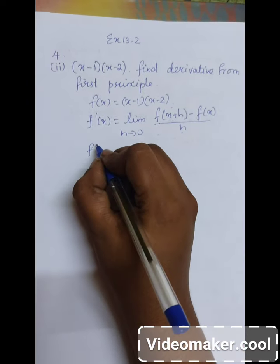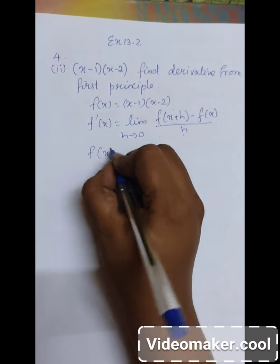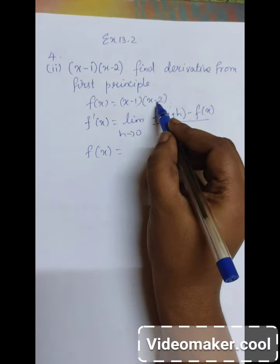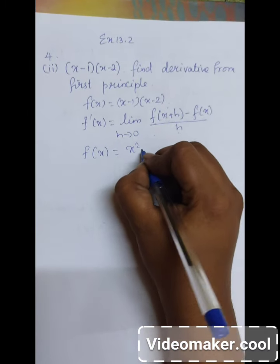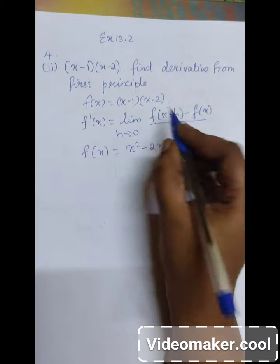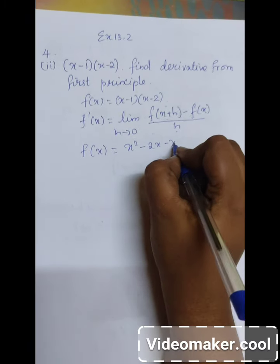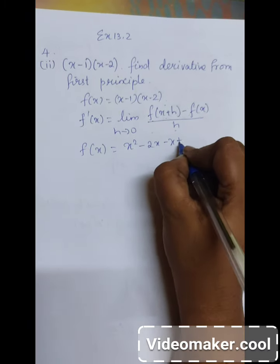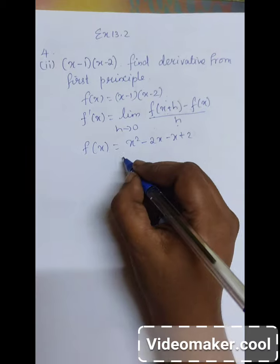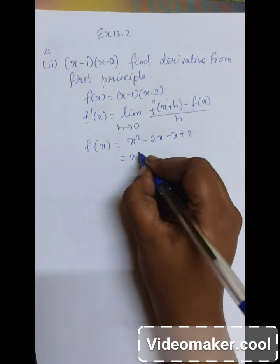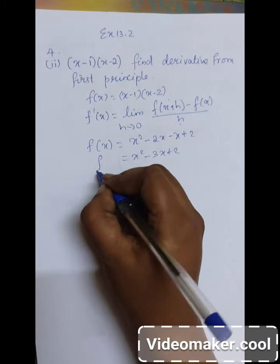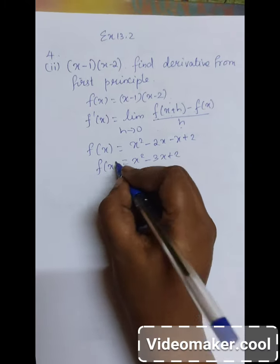Now I am going to rewrite the given function. Multiplying out the expression, we get x squared minus 2x minus x plus 2, which simplifies to x squared minus 3x plus 2. So this is the given function.